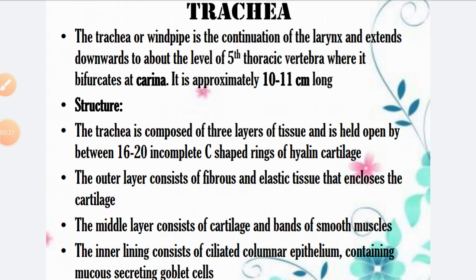The trachea, or windpipe, is the continuation of the larynx and extends downwards to about the level of the 5th thoracic vertebra, where it bifurcates at the carina. It is approximately 10 to 11 centimeters long. So the trachea is also called the windpipe; it is a continuation from the larynx, going downward to the level of the 5th thoracic vertebra, where it divides into two parts. That junction where the trachea divides is called the carina.